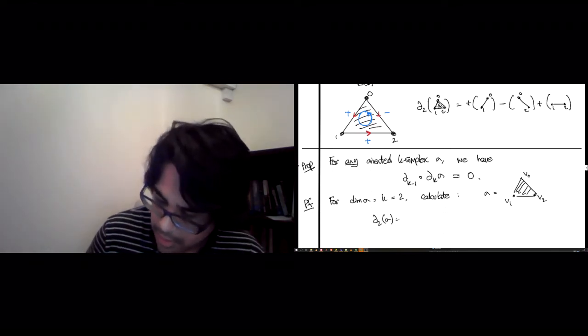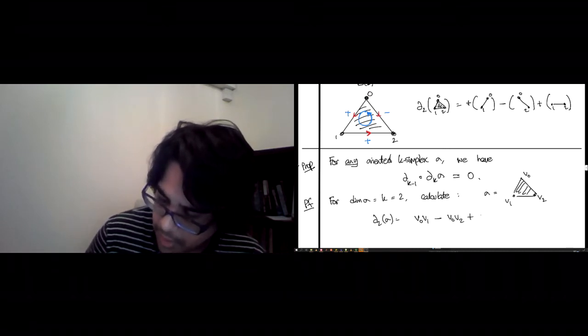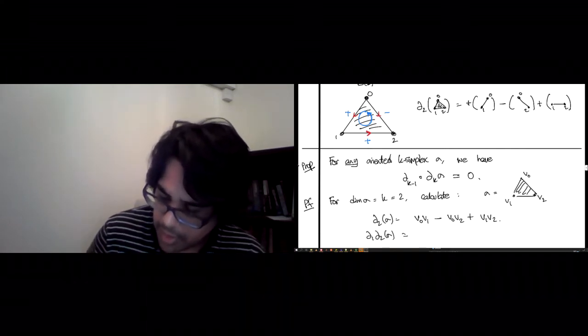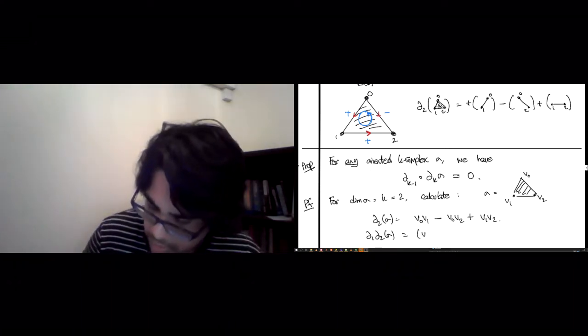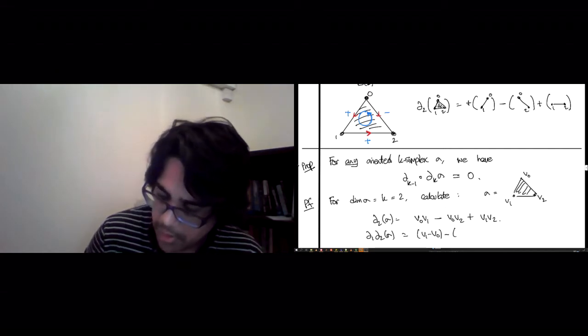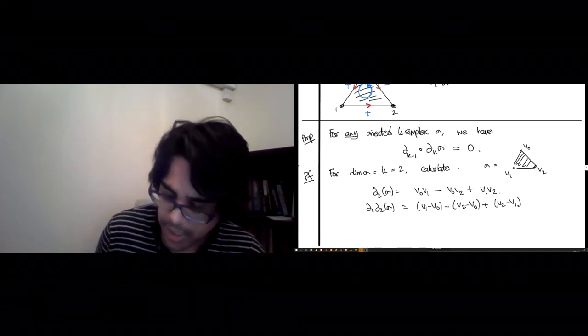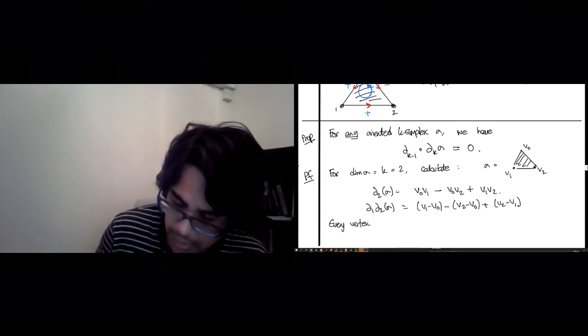So del 2 of sigma is going to be, as we computed upstairs, v0,v1 minus v0,v2 plus v1,v2. And now if you want del 1 of del 2 of sigma, you need to take the boundary of the edge v0,v1, which is v1 minus v0, similarly v2 minus v0, and now v2 minus v1.